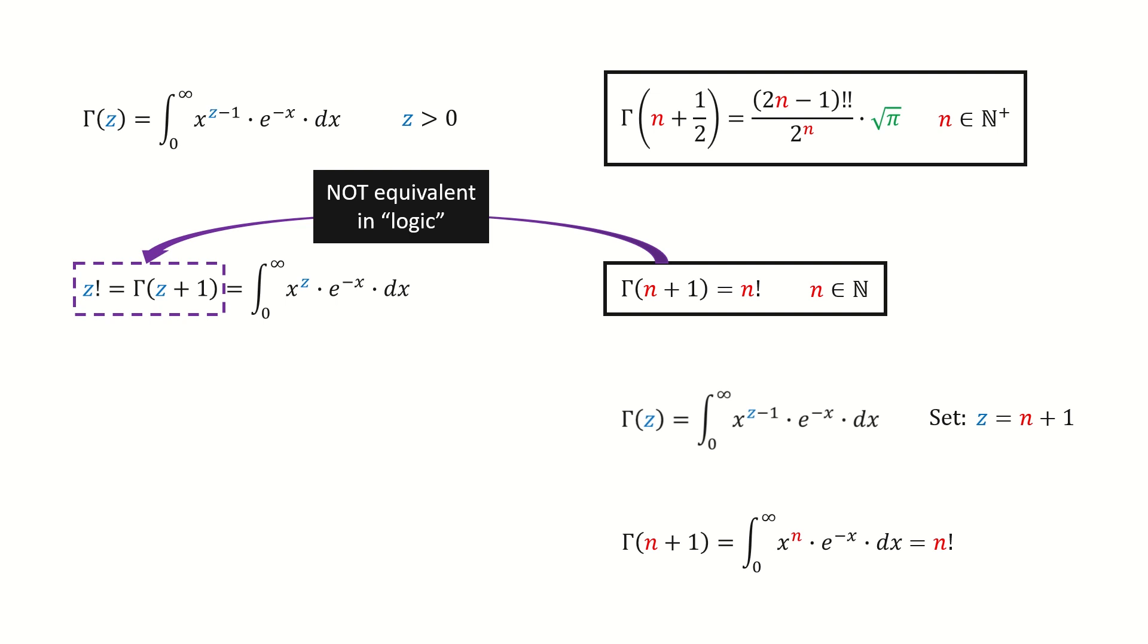But for the real number case, we use the gamma function to define z factorial. To make it clear, I write it in this way. Actually, we use the gamma function to extend the integer factorial to the real number factorial. I hope this clarifies the subtleties.